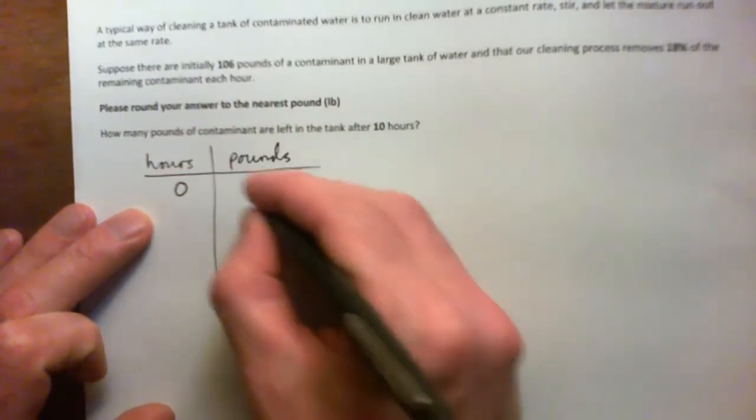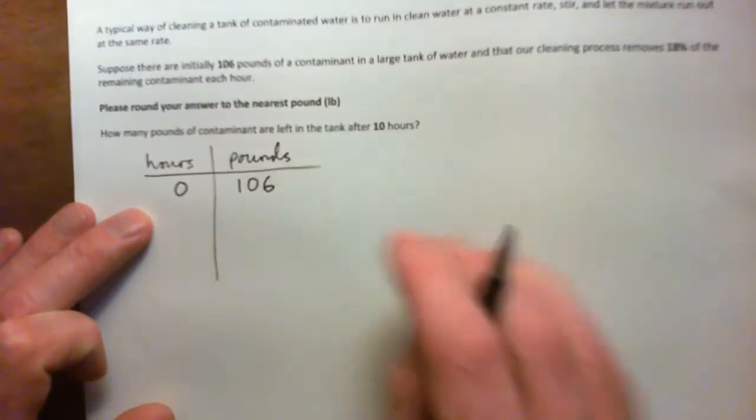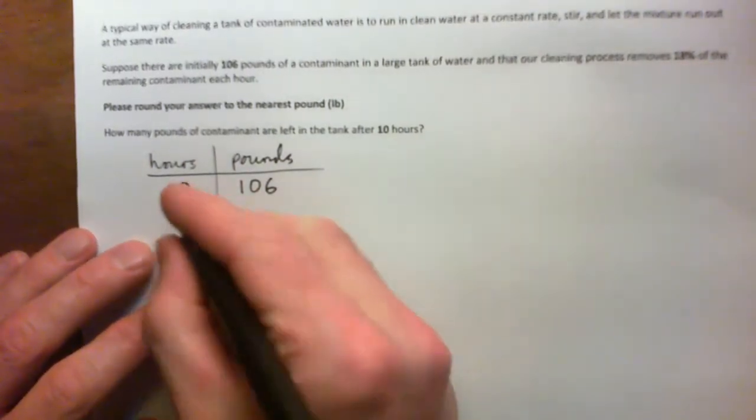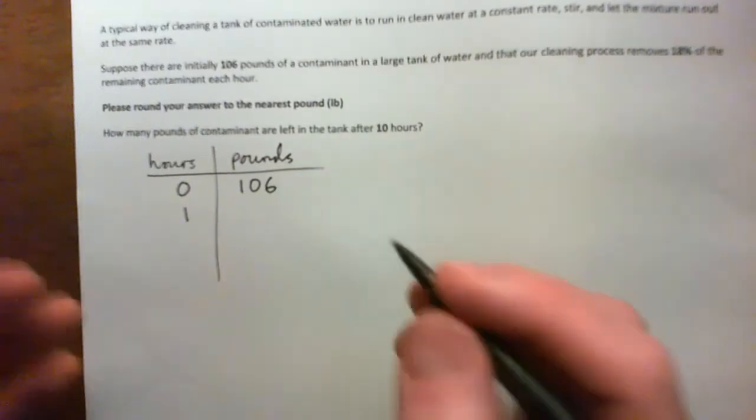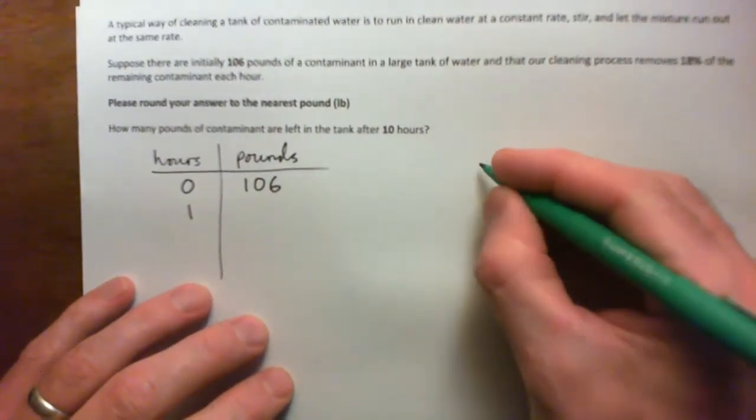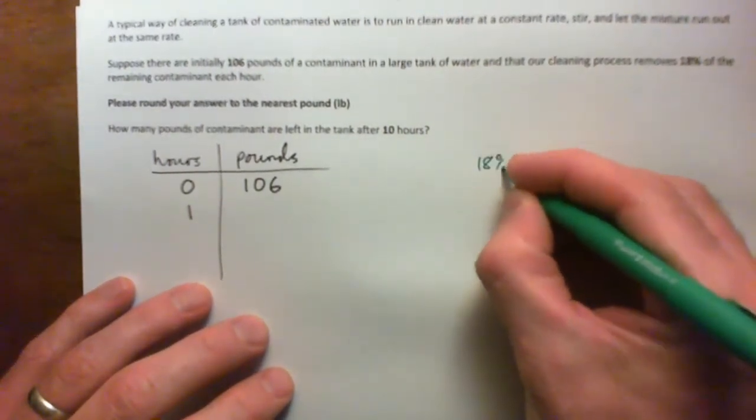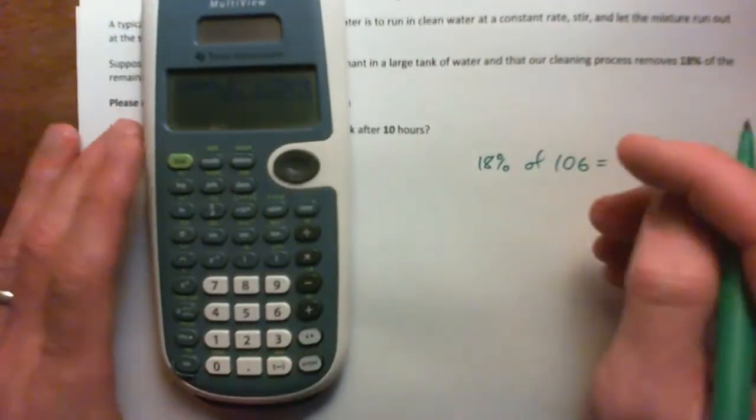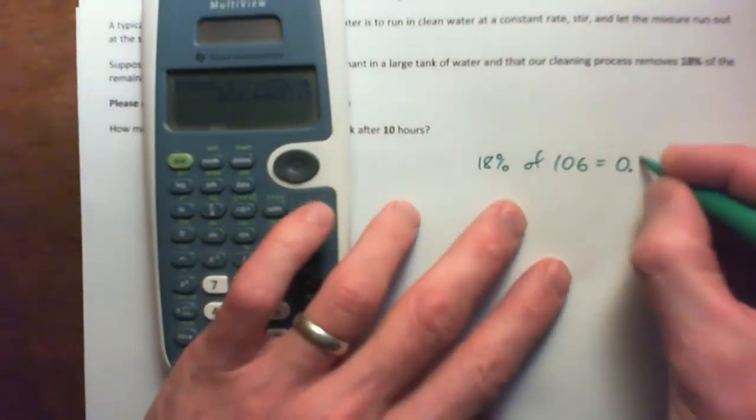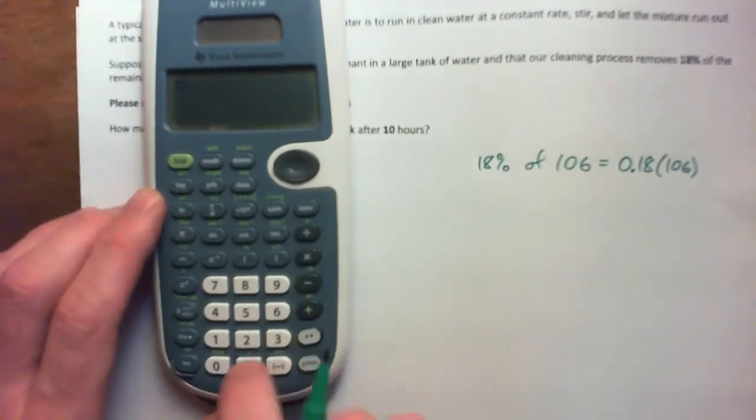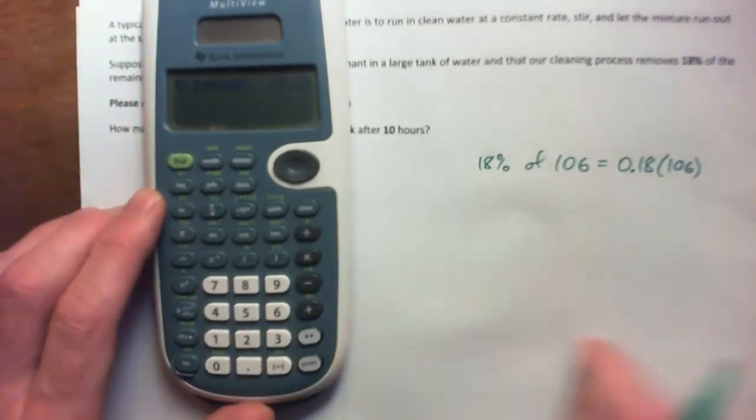So initially zero hours we've got 106 pounds. And our process removes 18% each hour. So after one hour we're going to remove 18%. There's a couple of ways of doing that. What if we did 18% of 106? We can do that. And that is 0.18 times 106, which gives 19.08.